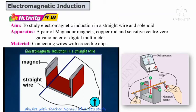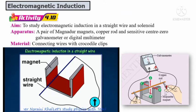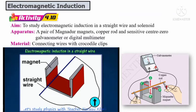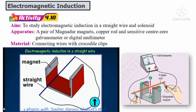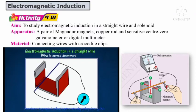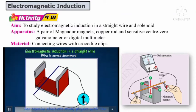What happens when the wire is moved in different directions — upwards (A), downwards (B), left (C), or right (D)? Observe what happens to the galvanometer reading. Watch this video to understand what happens to the copper rod. First, when the wire is moved down, you can see the deflection of the pointer is to the right.